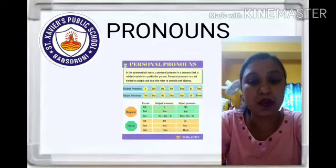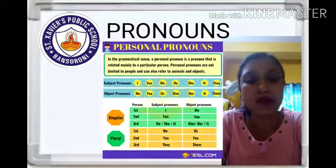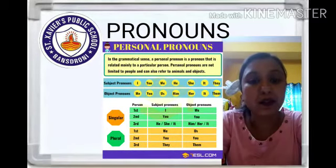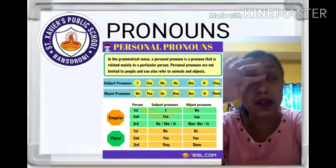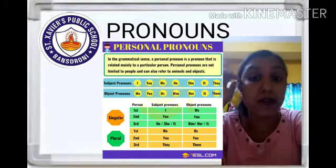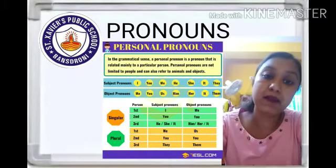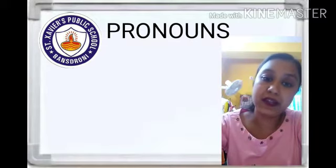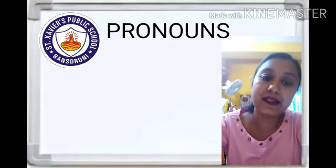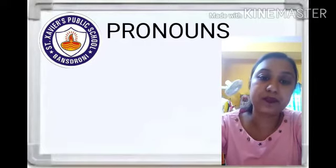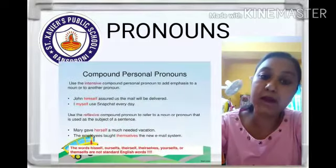First we will start with the personal pronoun. Personal pronoun is very easy — I, we, he, she — which is related with the person. First person: I, we. Second person: you, yours. Third person: he, she, it. This is very easy.